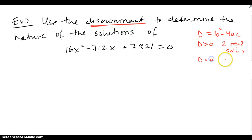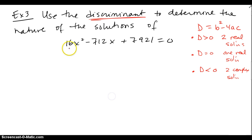If d is 0, you have one real solution. And if d is negative, you have two complex solutions. So that's basically all they want. Which of these cases are we going to encounter in example 3?